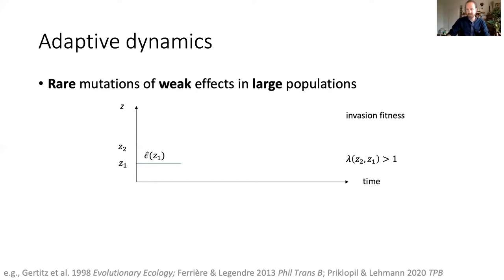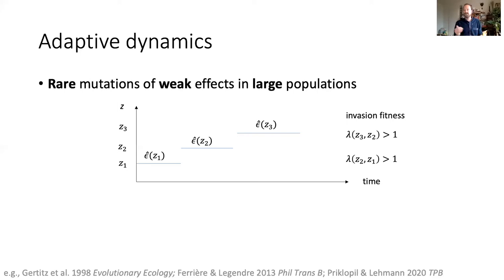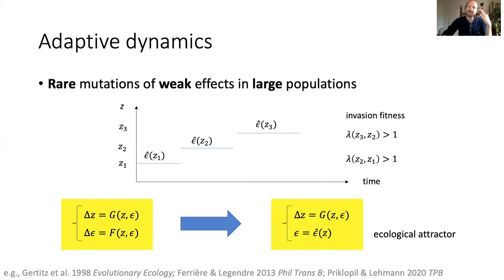Once the mutant fixes, the population equilibrates to its own ecological attractor that now depends on z2, and this process keeps going so that you can study gradual evolution in this population via a succession of mutant substitutions, where at each step the ecological variable is evaluated at an attractor given by the resident. Essentially, what you've done is reduce coupled eco-evolutionary dynamics to a single dynamical equation, which is much simpler to study.